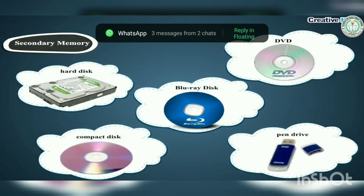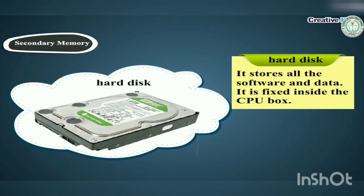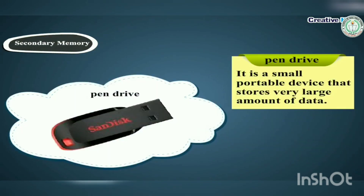Secondary memory is used to store data permanently — its data is not erased even when the computer is switched off. Some commonly used secondary storage devices are: hard disk, which stores all the software and data and is fixed inside the CPU box; compact disk, a portable device that stores a large amount of data; and pen drive, a small portable device that stores a very large amount of data, also called a flash drive.